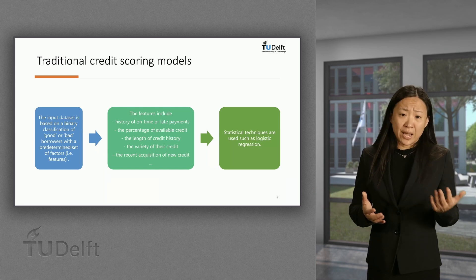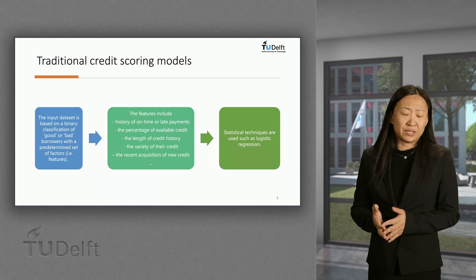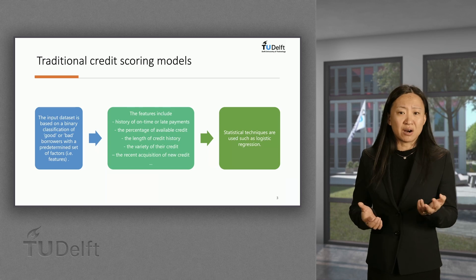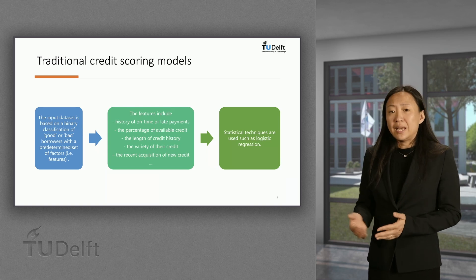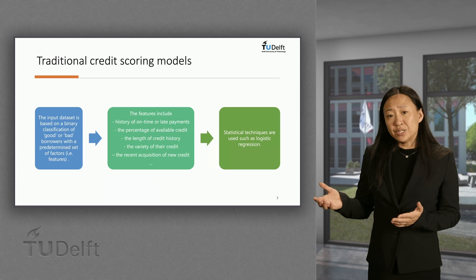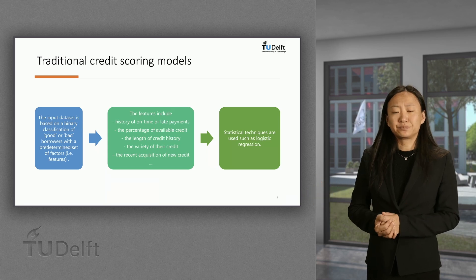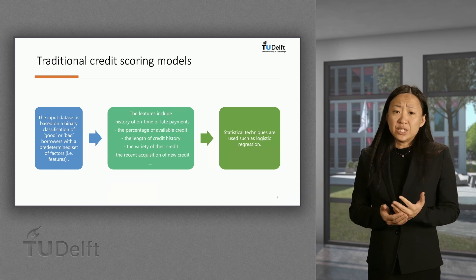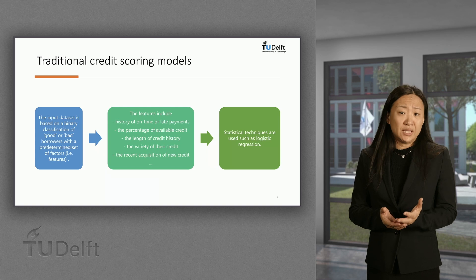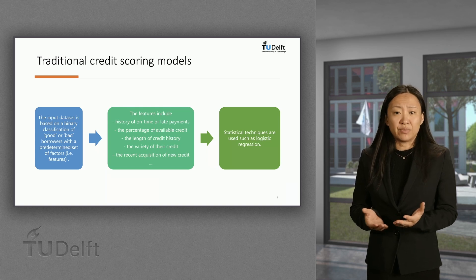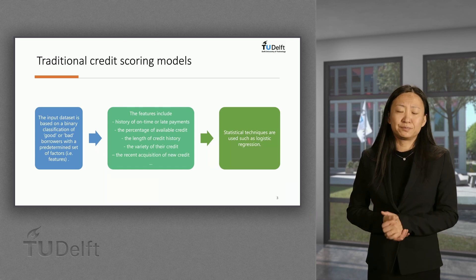Additional features include the variety of their credit, such as credit cards, mortgages, and installment loans, and the recent acquisition of new credit. Traditional credit scoring models use statistical techniques, such as logistic regression.